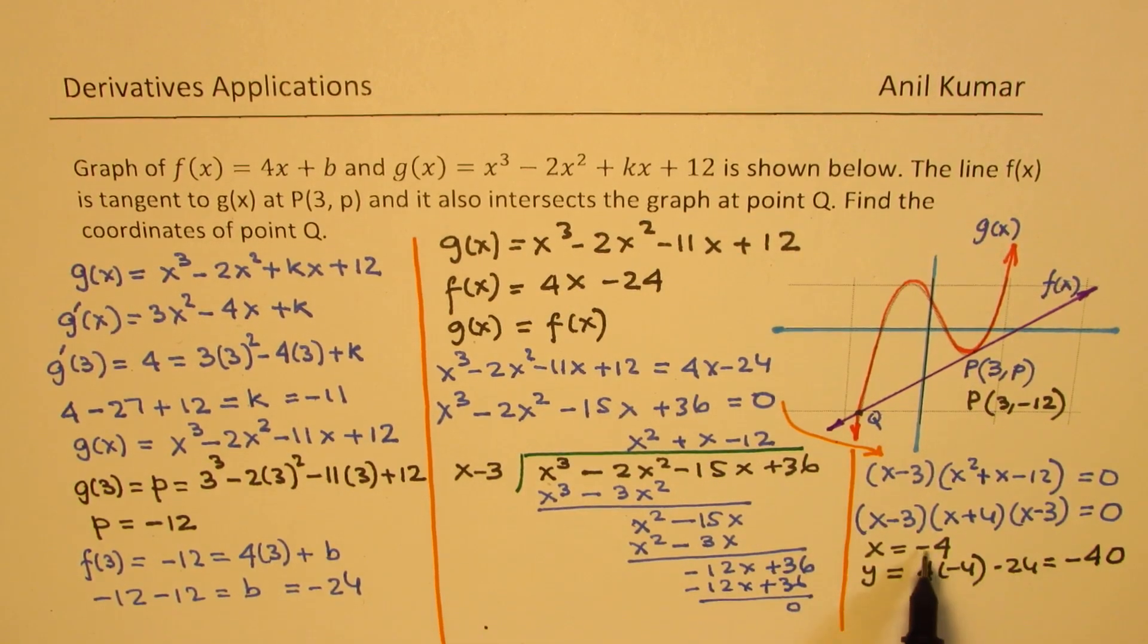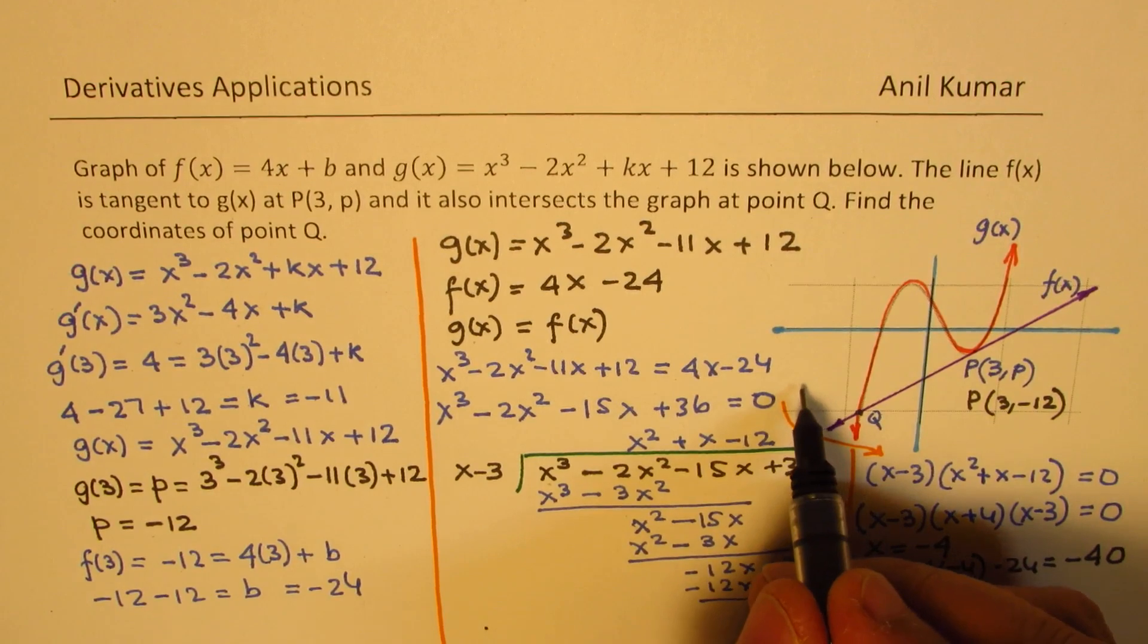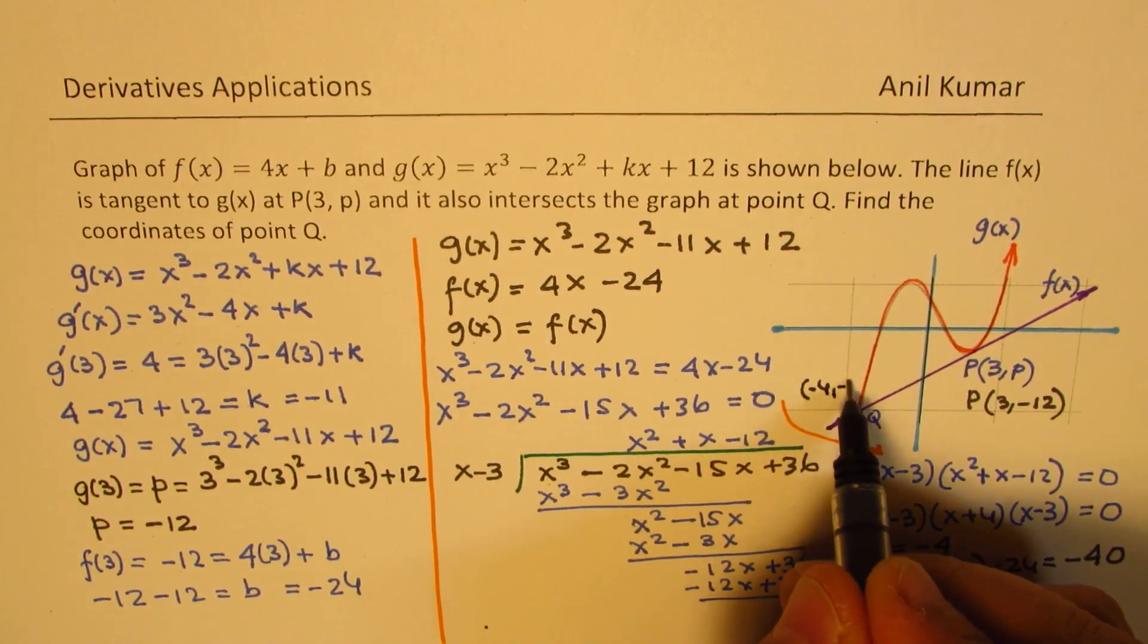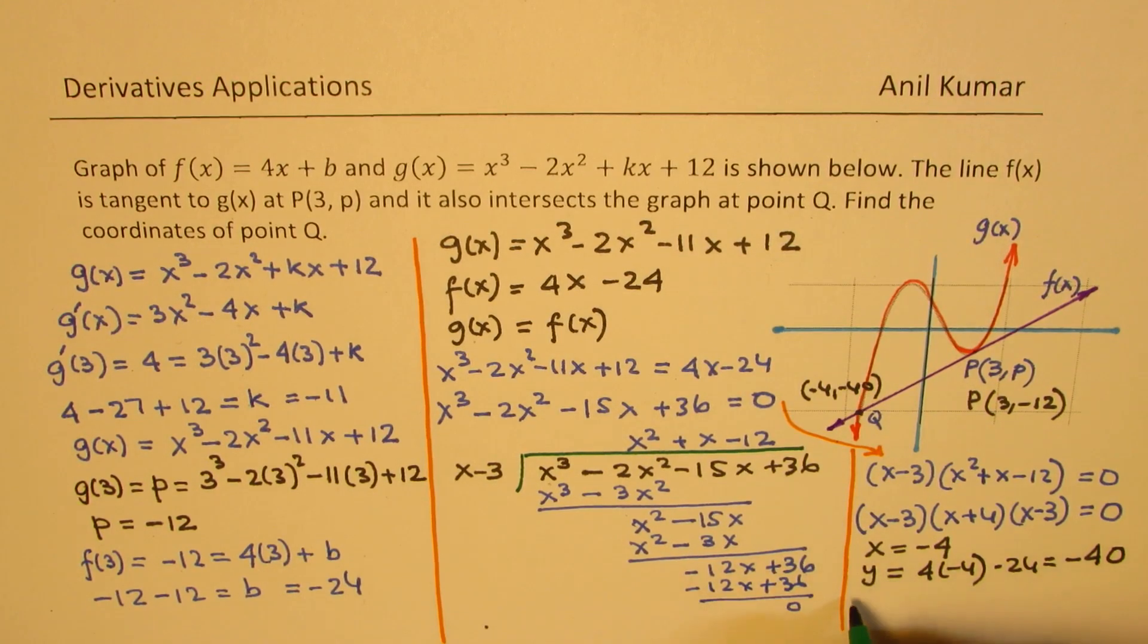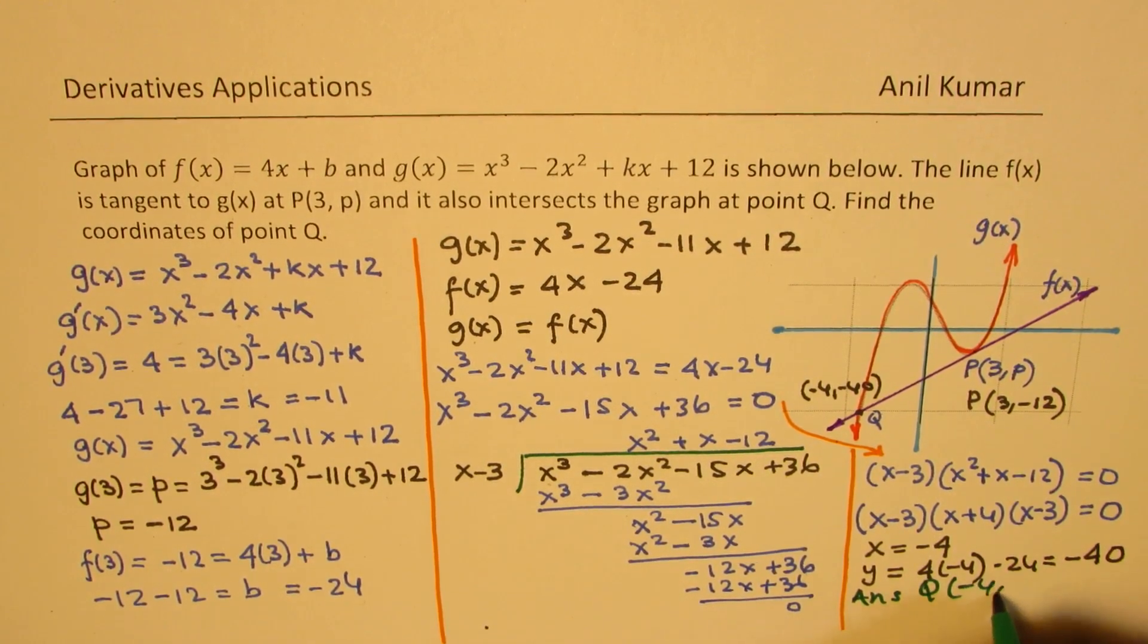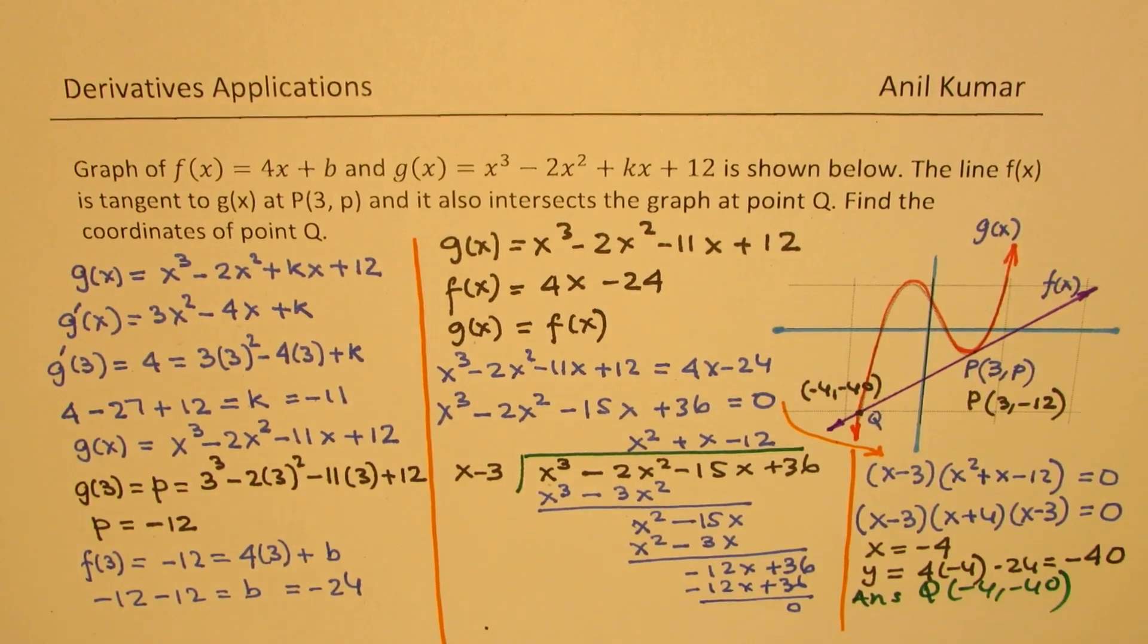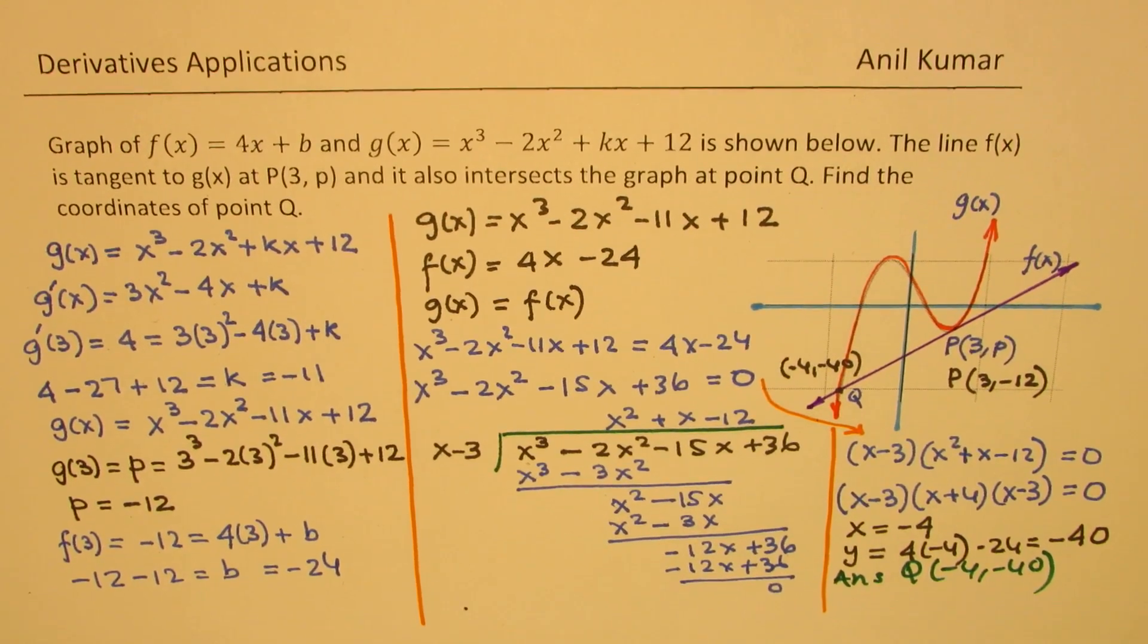So we get this point as (-4, -40). Is that clear to you? So we can find our answer, and that is the point Q: (-4, -40). Do you see that? So that is how this question can be solved.